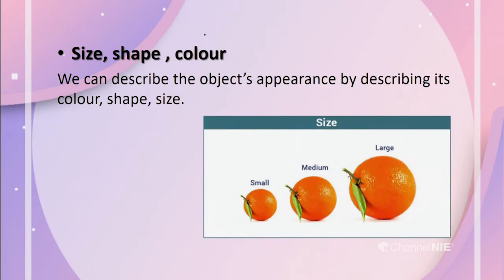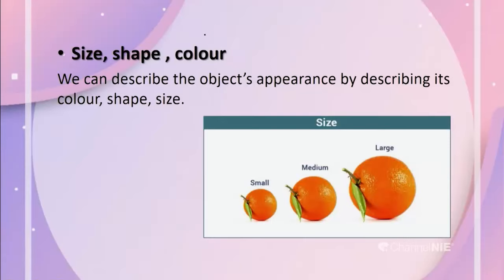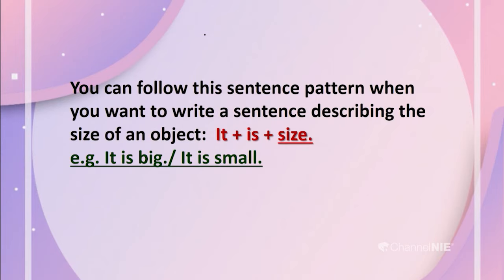Let's take them one by one. The first thing: size, shape, and color. We can describe the object's appearance by describing its color, shape, and size. Ms. Pridashini, what are the words we use to describe sizes? We can use small, medium size, big, very big, large, enormous. There are a lot — small, medium, large, and many more. When describing the size of an object, you can follow the sentence pattern: start with the pronoun 'it', then add 'is', and the size word. For example: it is big, or it is small.